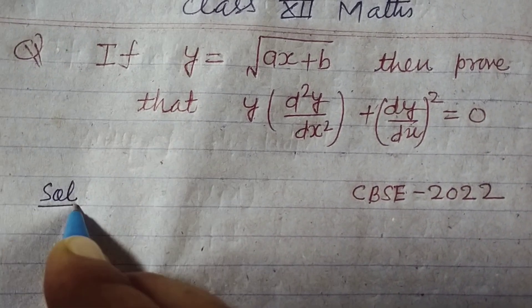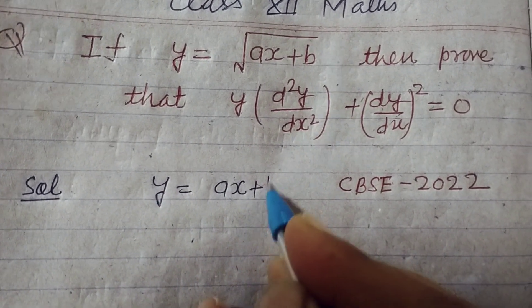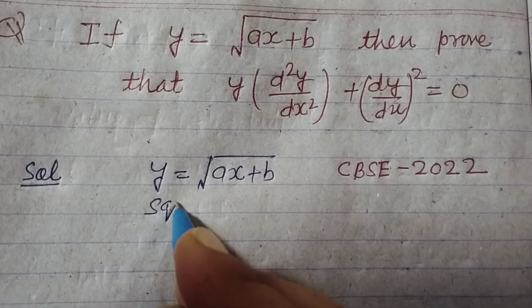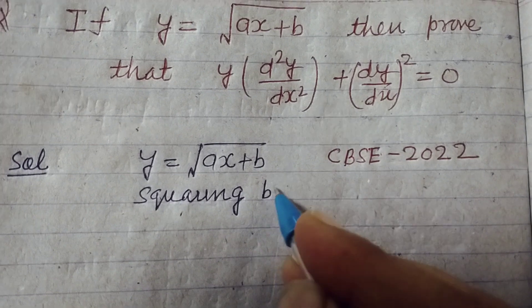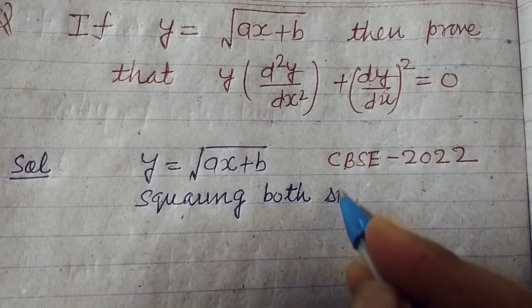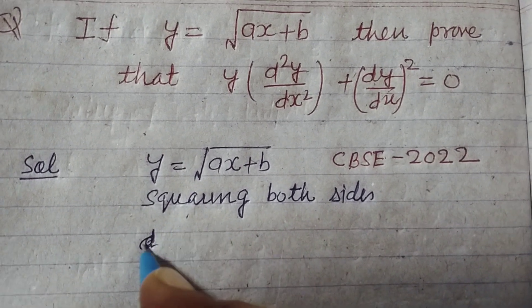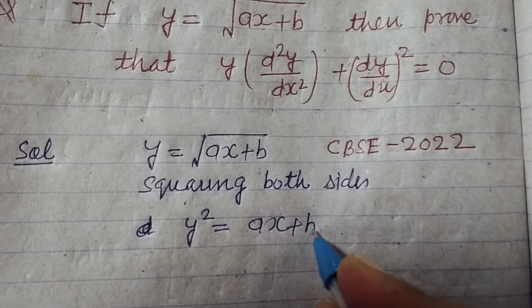So here we take y equal to square root of ax plus b. Squaring both sides, we get that y square equals ax plus b.